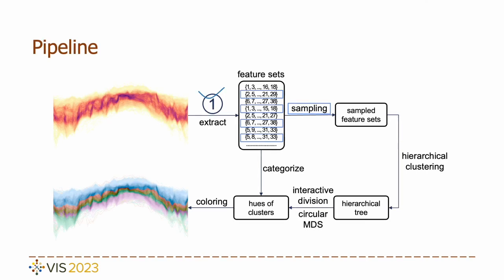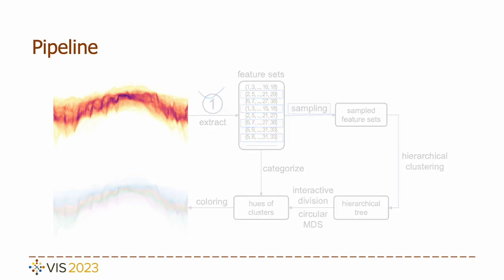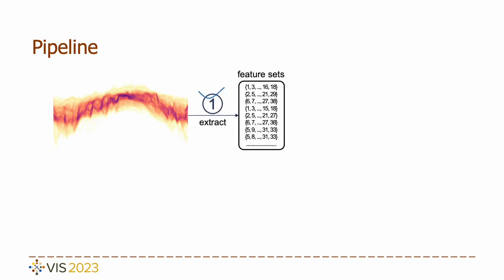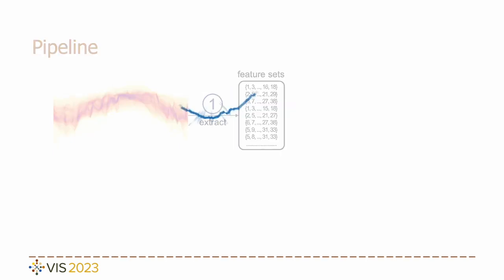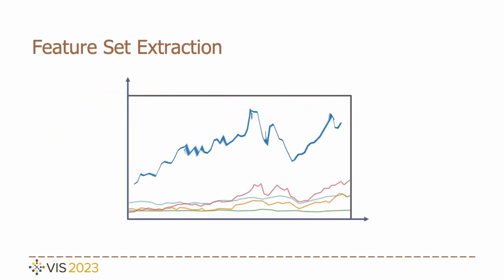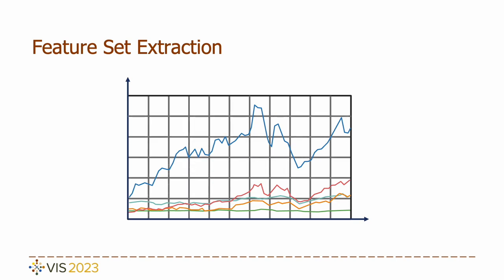Let's dive into our pipeline. First, within each bin, we don't simply calculate its density — we also extract its features, which we refer to as the feature set. Each bin corresponds to a unique feature set containing identifiers of the lines that intersect with that particular bin.